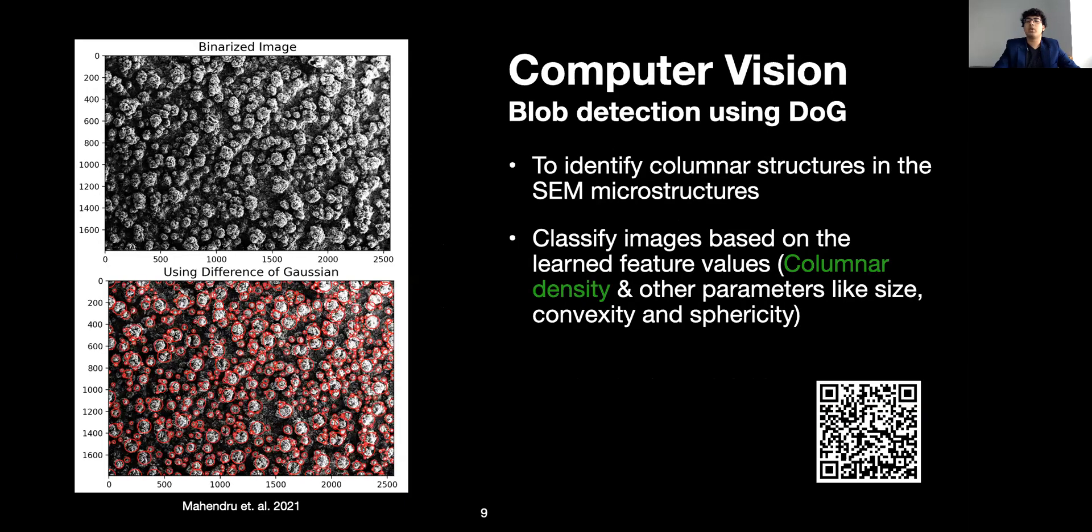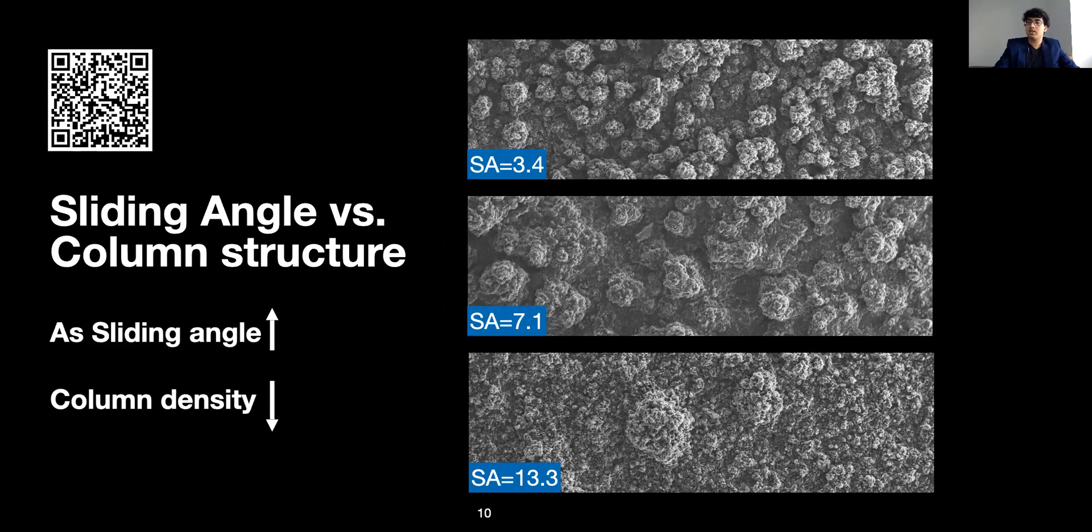Finally, we use computer vision algorithms, namely blob detection using determinant of Gaussian method to identify columnar structures and other microstructure properties, such as size, convexity, and sparsity. Where this helps us is analyzing sliding angles versus column structures. As we can see in the three different images, as we increase the sliding angle, the column density decreases.